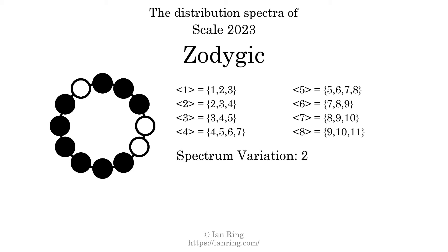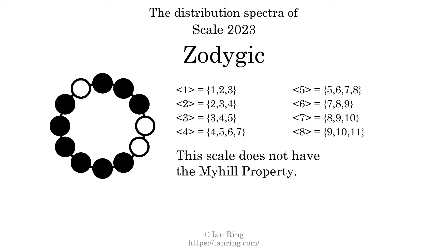The spectrum variation is the sum of all the widths, divided by the number of tones. The spectrum variation of this scale is 2. Since the variation is greater than 0, this indicates that the scale is not perfectly even. The highest spectrum width is 3; since this is greater than 1, we know this scale is not maximally even. If every spectrum has exactly 2 specific intervals, we call that the Myhill property. This scale does not have the Myhill property. Since the generic interval ranges overlap, this scale is an improper scale.